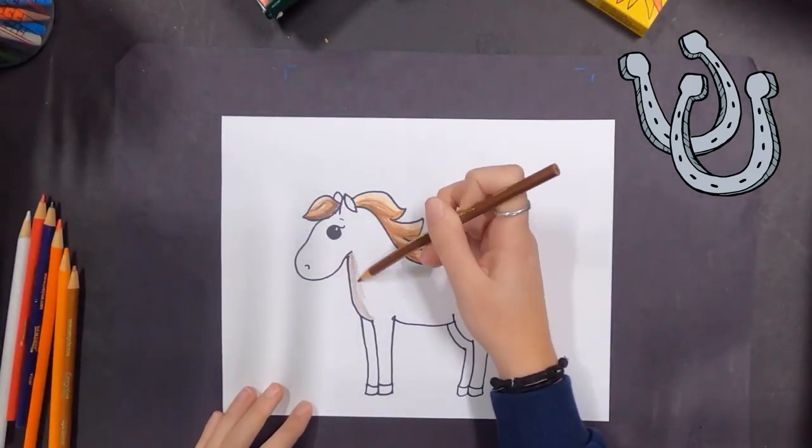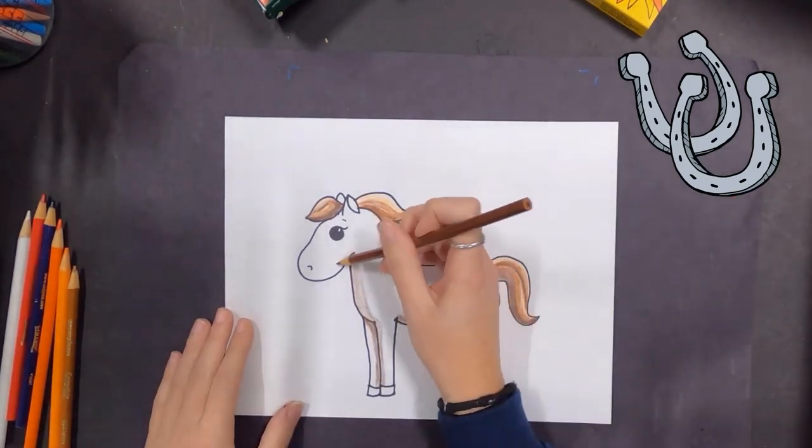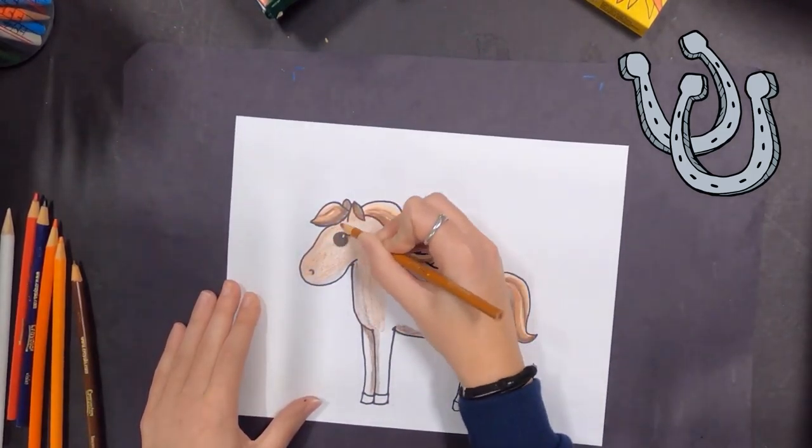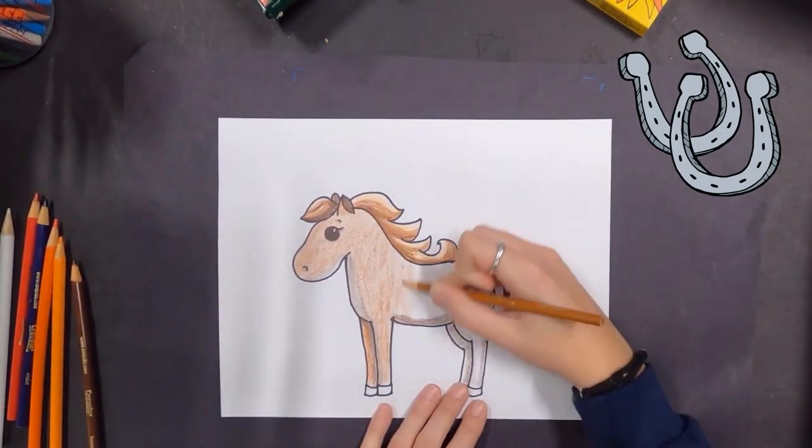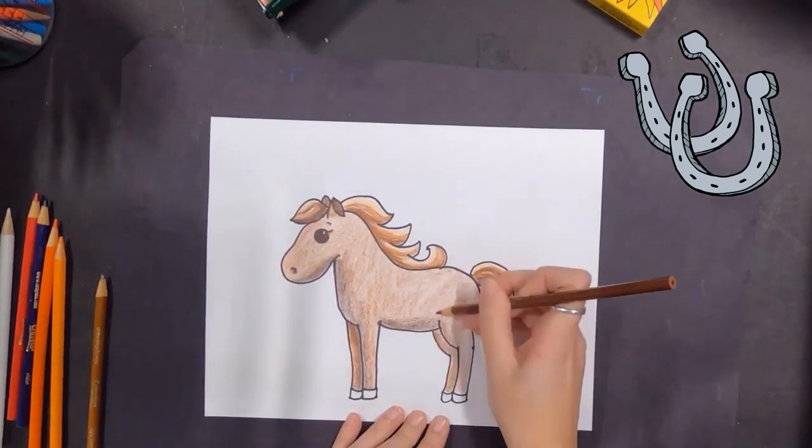Okay, here we go. Now we're going to color it in. I'm going to use lots of colors. I wonder what you're going to use. Are you going to use realistic colors, like ones that you've actually seen a color of a horse? Or are you going to use a rainbow of colors and make your horse exactly how you want it?